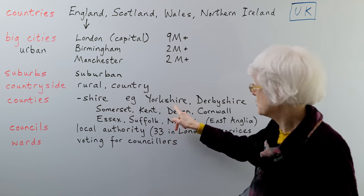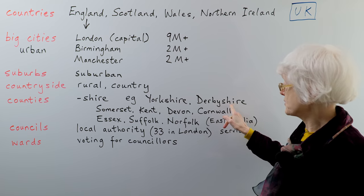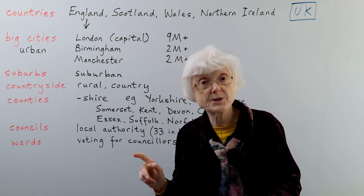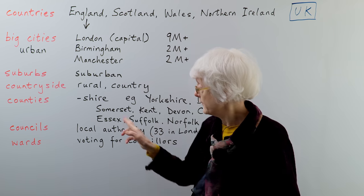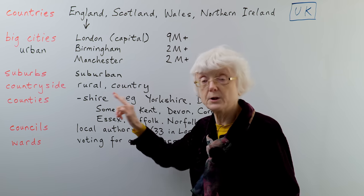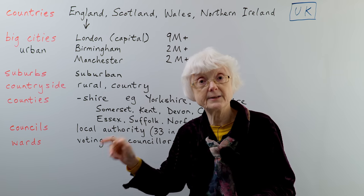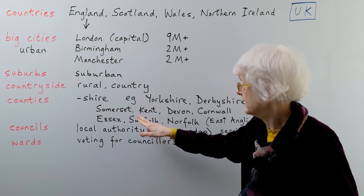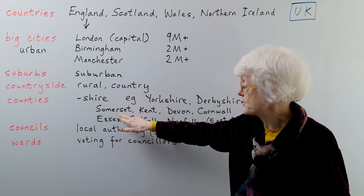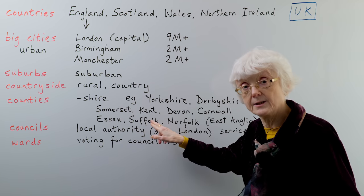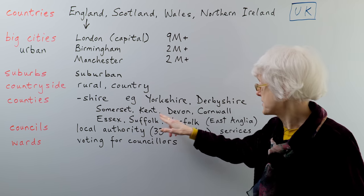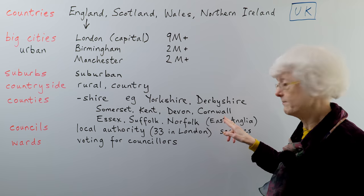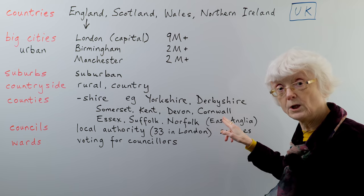So the shires: Yorkshire, Derbyshire. But some counties don't have the word 'shire' at the end — you get all sorts of different names. For example, Somerset, Kent, Devon, Cornwall.